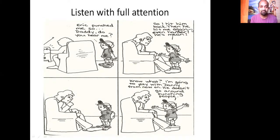'Eric punched me.' 'So daddy, do you hear me?' At that moment, the parent turned towards the child, turns towards the child. 'So I hit him back, then he hit me again, even harder. He's mean. You know what? I am going to play with Danny from now on. He doesn't go around punching people.' What happened here? The difference is that the child came up with her own solution. This happened because the parent or father has listened to her with full attention.